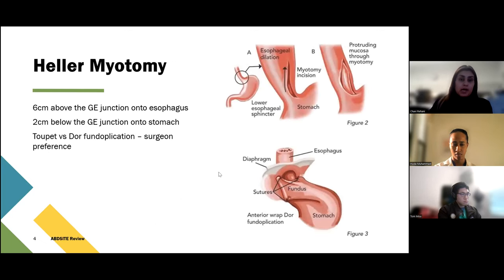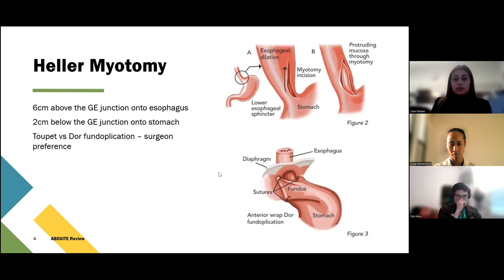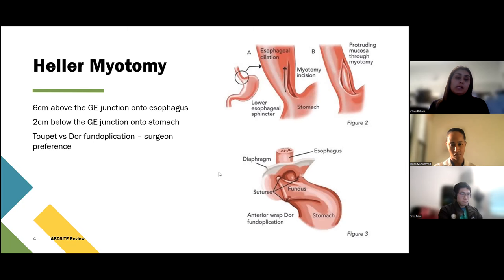For the Heller myotomy, you want to go about six centimeters above the GE junction onto the esophagus, but you also need to come down about two centimeters onto the stomach to have a complete myotomy. You're going to go through both layers — that inner circular layer and that outer longitudinal layer — to have a complete myotomy. You should be able to see your mucosa protruding and there should be no holes in your mucosa. Commonly with that, people do either a Toupet or a Dor fundoplication based on surgeon preference. A Nissen would be incorrect.